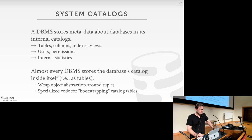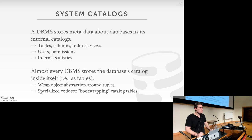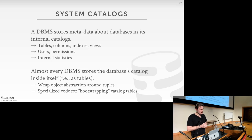Almost every DBMS stores the database catalog inside itself, using the same abstractions — tables, indexes — used to store regular data. This creates a chicken-and-egg problem: if you need metadata to answer a SQL query, but need to run a SQL query to get the metadata, where do you start? Systems solve this with special wrappers around metadata objects to directly encode and decode catalog values — bootstrapping the catalog tables.